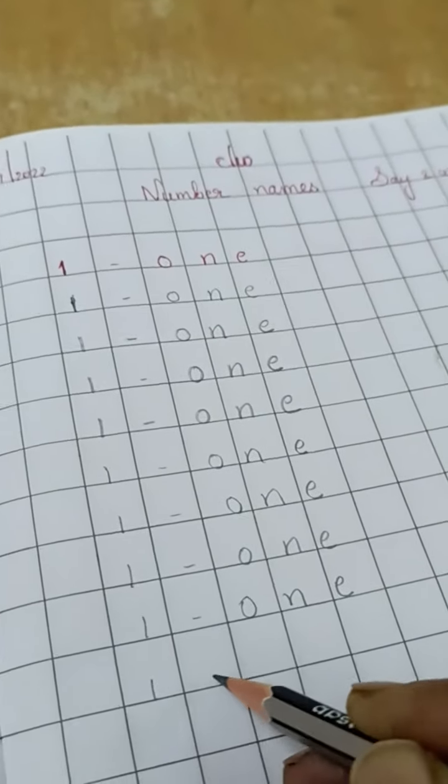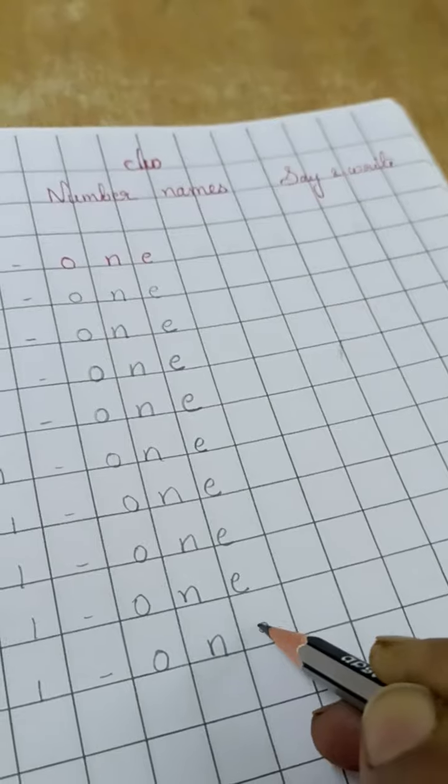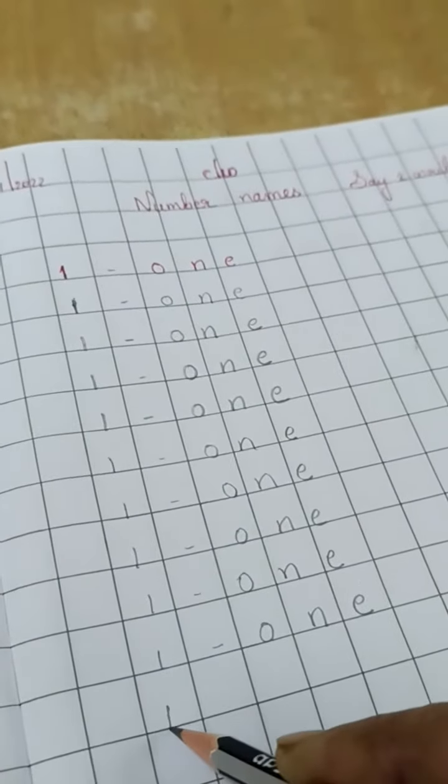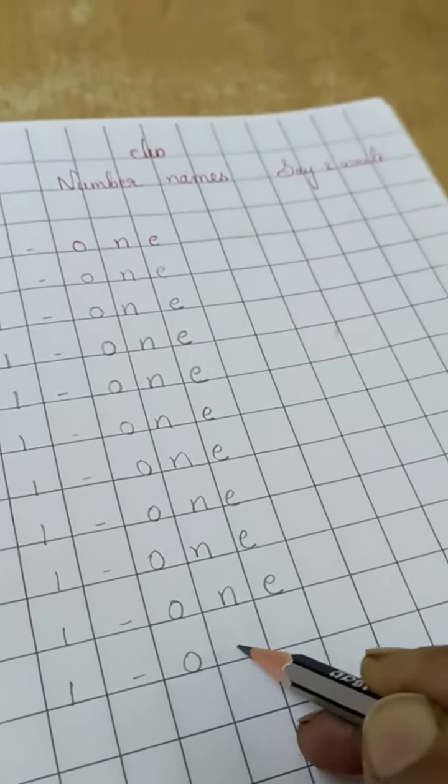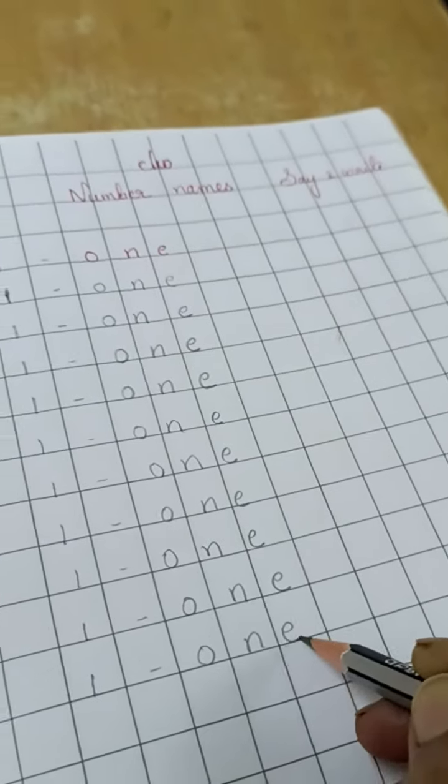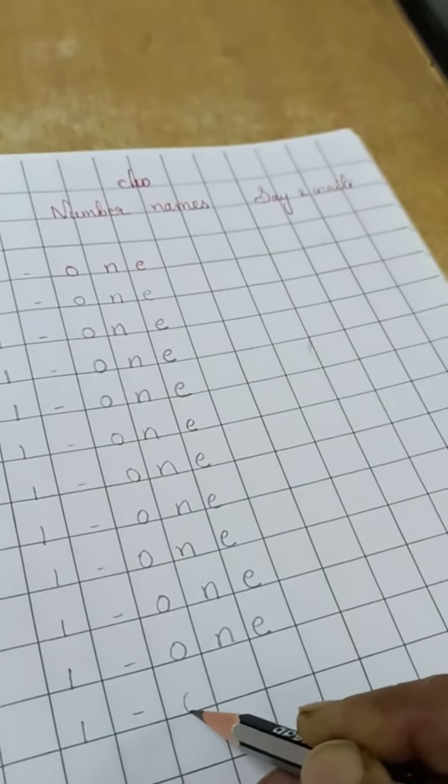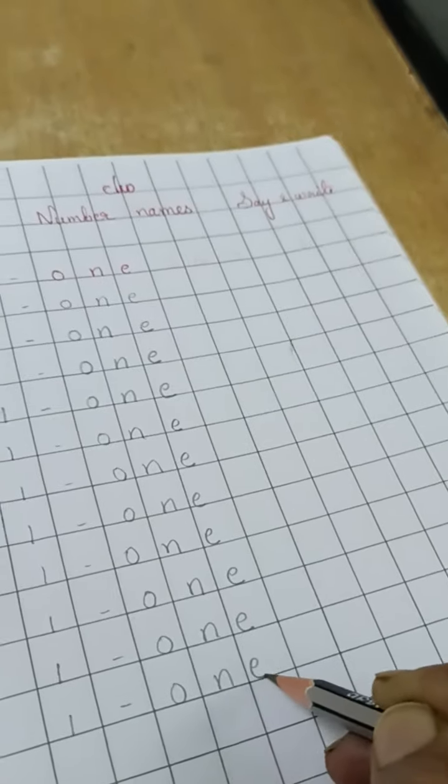One dash O-N-E-1. Write neatly children. Touch the below line and write. Okay? Now write O-N-E-1.